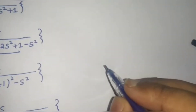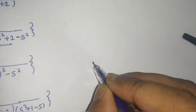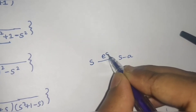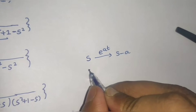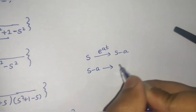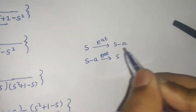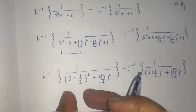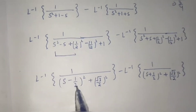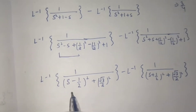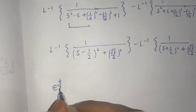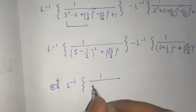What happened in Laplace transform: when we move from S to S minus a, we just used to multiply by e power at. Now in Laplace inverse, we will move from S minus a to S, and again we will multiply by e power at. So here, if I have to move from S minus half to simply S — S minus a to S — I will have to multiply by e power t by 2.